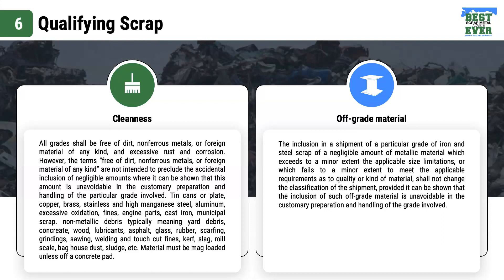ISRI scrap spec general information is broken down into four parts: cleanliness, off-grade material, residual alloys, and deviations. I have taken the language from the ISRI spec along with a number of other steel mills in North America to come up with this all-inclusive general information section of what scrap metal is and isn't. So let's start with the definition of cleanliness.